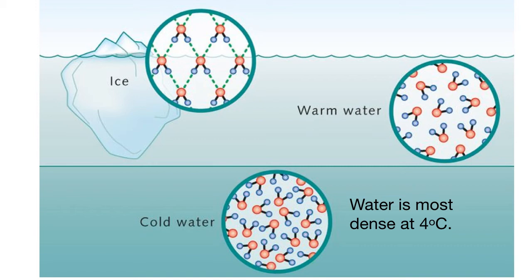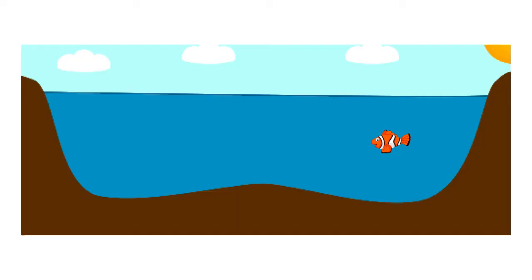Now, it turns out that even though ice is less dense than liquid water, this unique density only applies really to the solid form of water, so just to ice. Warm water is, as you would expect, less dense than cold water. Water is actually at its most dense at 4 degrees Celsius.